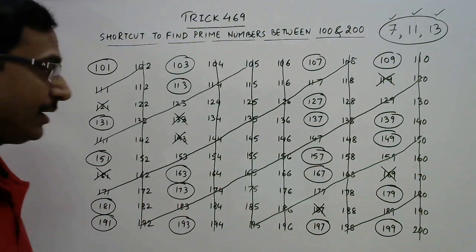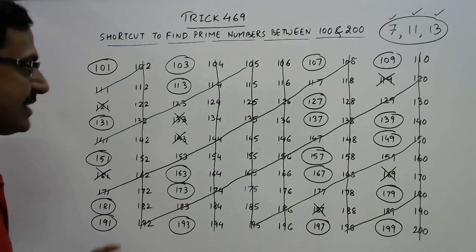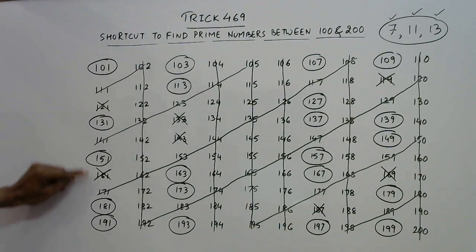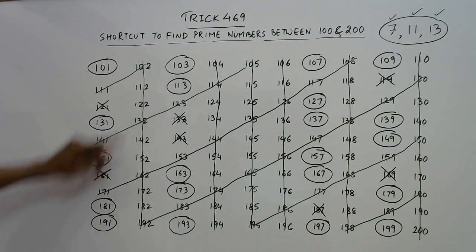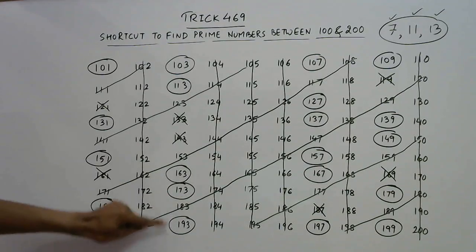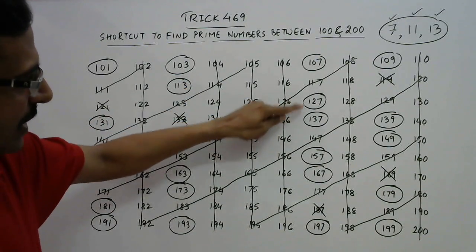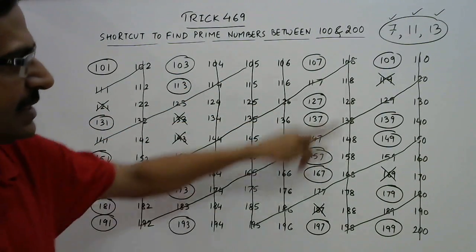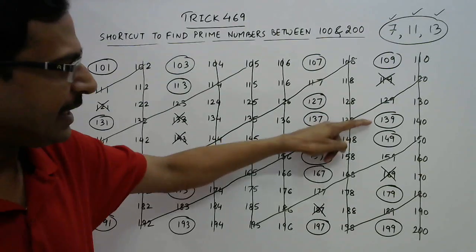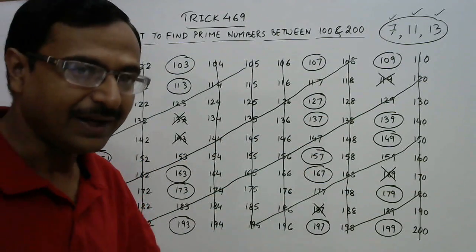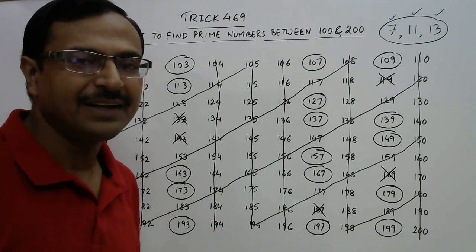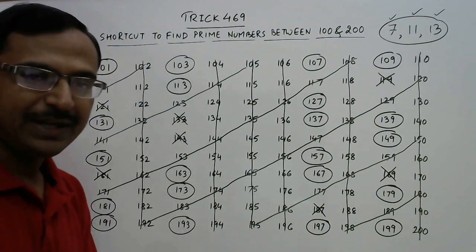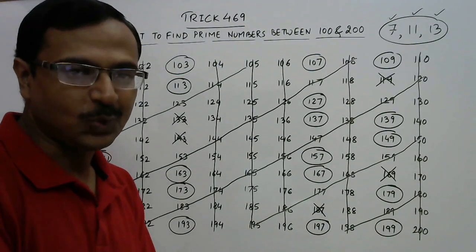Let us count the encircled numbers: 1, 2, 3, 4, 5, 6, 7, 8, 9, 10, 11, 12, 13, 14, 15, 16, 17, 18, 19, 20, 21 — and that is what I told you in the beginning: there are 21 prime numbers between 100 and 200.